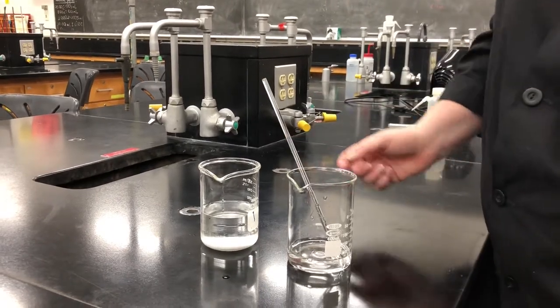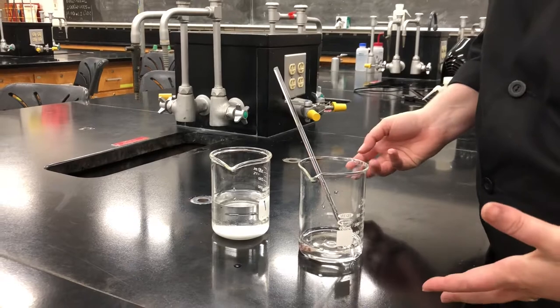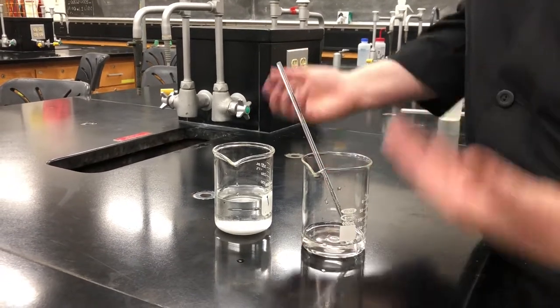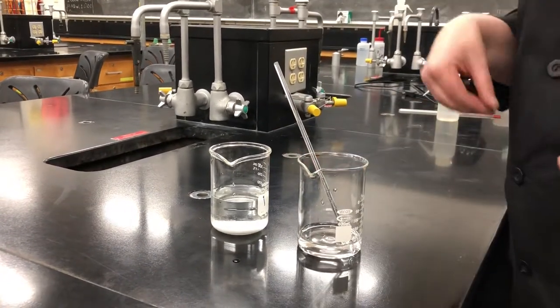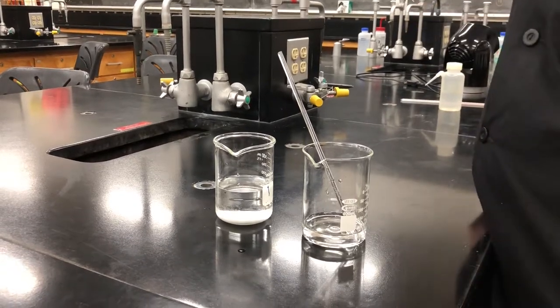I'm putting my stir rod into that second beaker so that I don't make a mess or lose any of my supernatant liquid. Once it has settled some more, we just repeat that process so that we have as little liquid as possible.